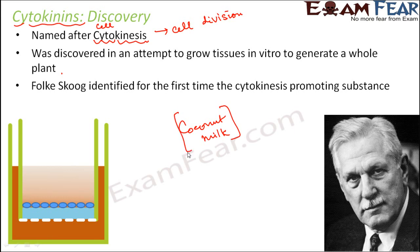Later it was found that the magic ingredient of coconut milk was nothing but another growth-promoting hormone which actually promotes cell division. Fox Skoog was the scientist who identified for the first time a cytokinesis-promoting substance, and he named it kinetin at that time, but it was later known as cytokinin. This discovery happened not long ago — somewhere around the mid-twentieth century. This is how cytokinin was discovered.